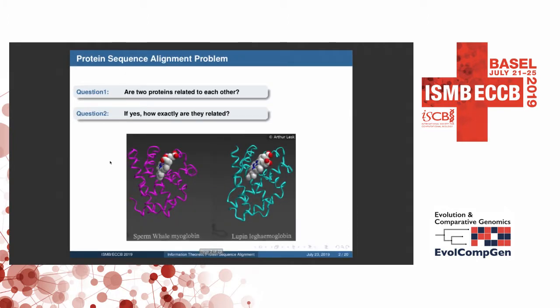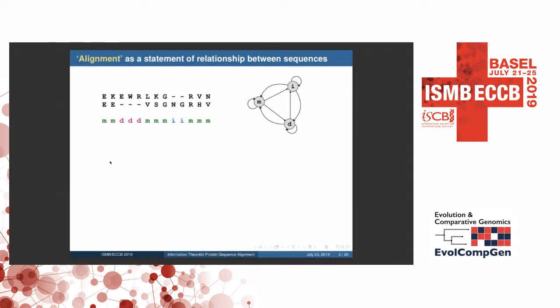So as many of you know, protein sequence alignment answers two main questions. First one is whether two proteins are related to each other. And second answers, if so, how exactly are they related?